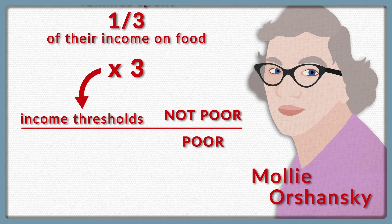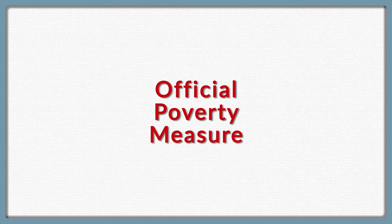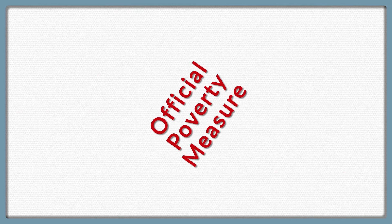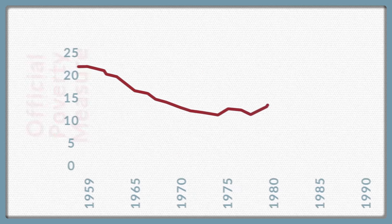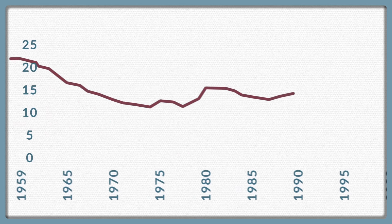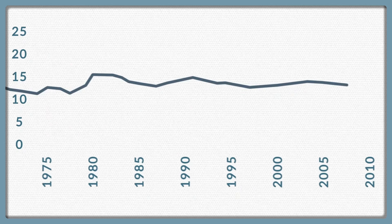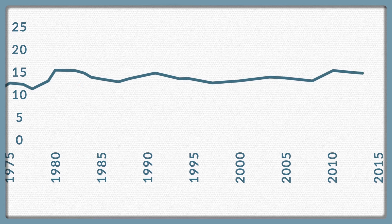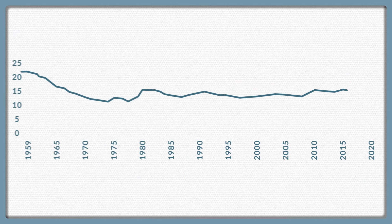The measure developed by Orshansky became known as the Official Poverty Measure. According to this measure, poverty fell quickly starting in the 1960s, but then leveled out and has consistently been between about 11 and 15 percent, with the rate rising during recessions and dropping when the economy has been strong.